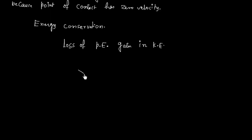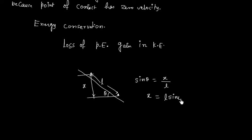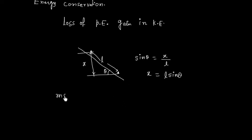The situation is something like this: the initial center of mass is here and the final center of mass is here, and this distance is L. This angle is theta, so let us say the vertical drop is x. We can say sin theta equals x over L, so x equals L sin theta. So the loss in potential energy is MgL sin theta.